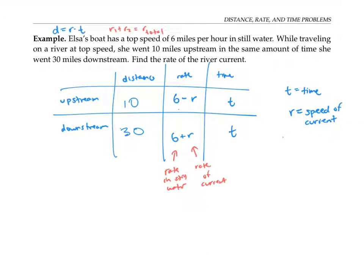Now that we've charted out our information, we can turn it into equations using the fact that distance equals rate times time. We actually have two equations: 10 equals six minus r times t, and 30 is equal to six plus r times t.